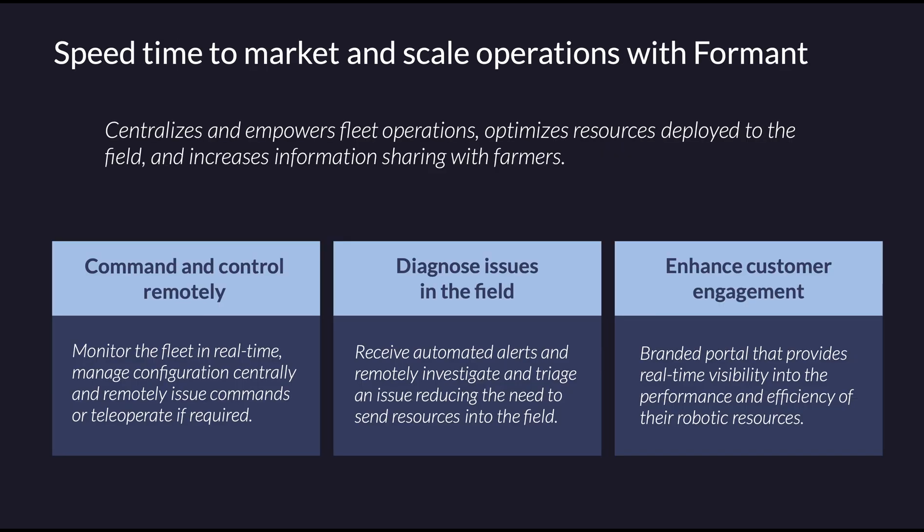From a business value perspective, the two clearest ways that we help save or make money for companies working in agriculture are to help them get new products to market much faster, and to make sure they can minimize their operating costs and continuously improve their unit economics as they scale.